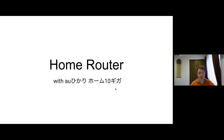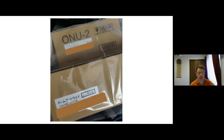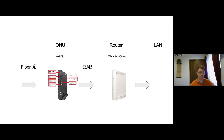I wanted to make a short video about my experiences using my own router with Hikari Fiber. I have the AU Hikari 10GB service from KDDI, which usually comes with an ONU and an A-term rental modem. The setup is: fiber comes into the ONU, then RJ45 to their router, and then off to your LAN.